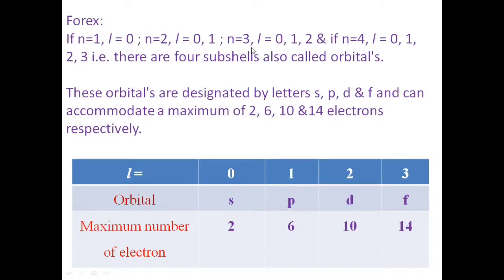If n is equal to 3, then L has values 0, 1, and 2. If n is equal to 4, then L has values 0, 1, 2, and 3. The subshells, also called orbitals, are S, P, D, and F.